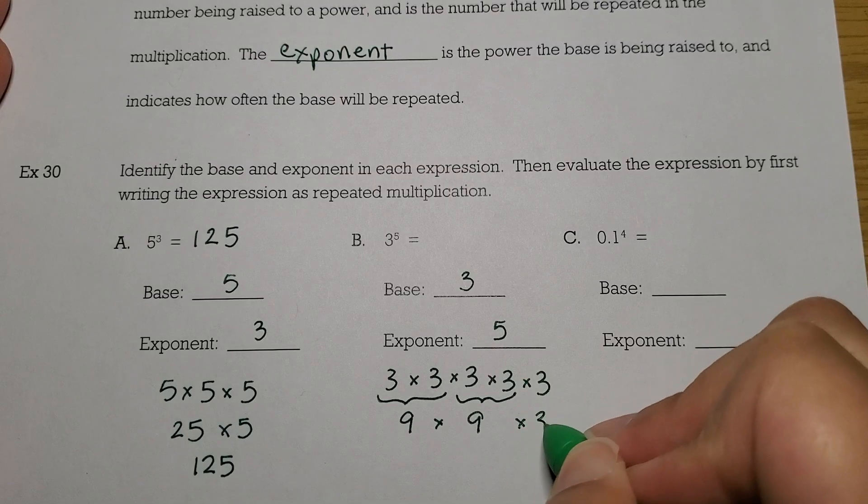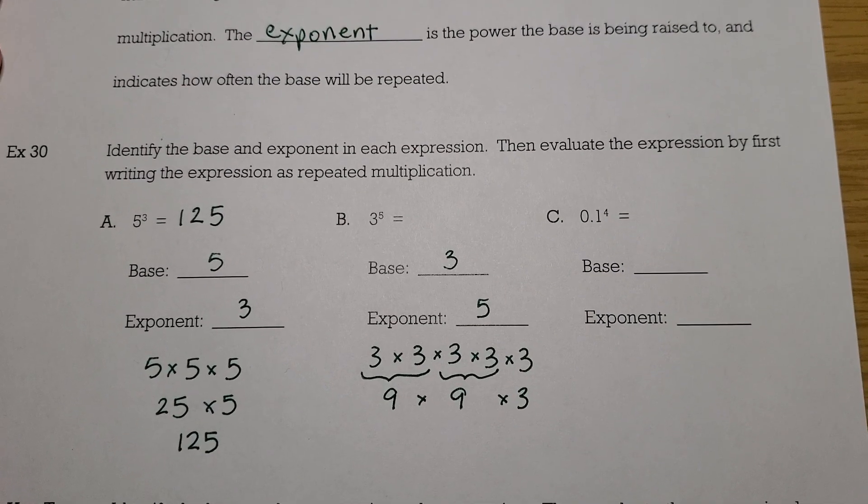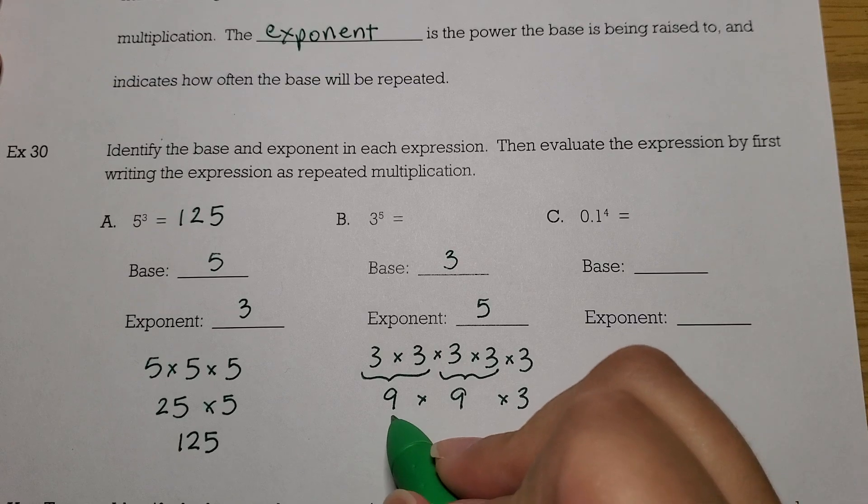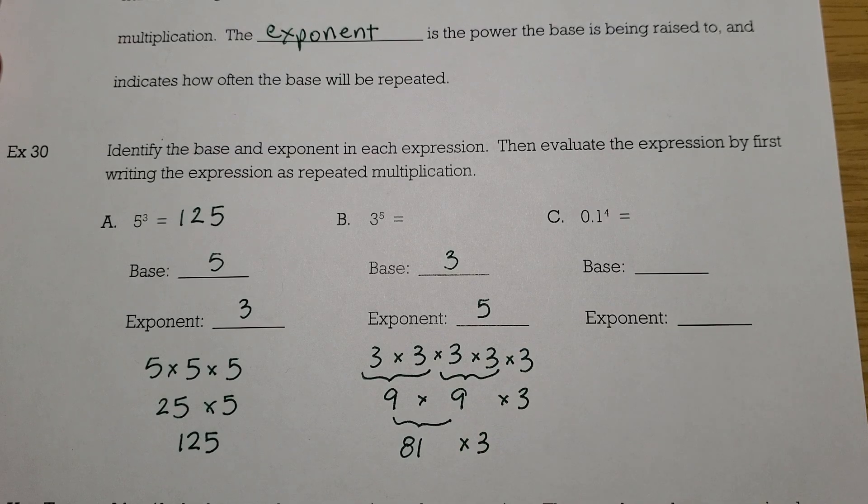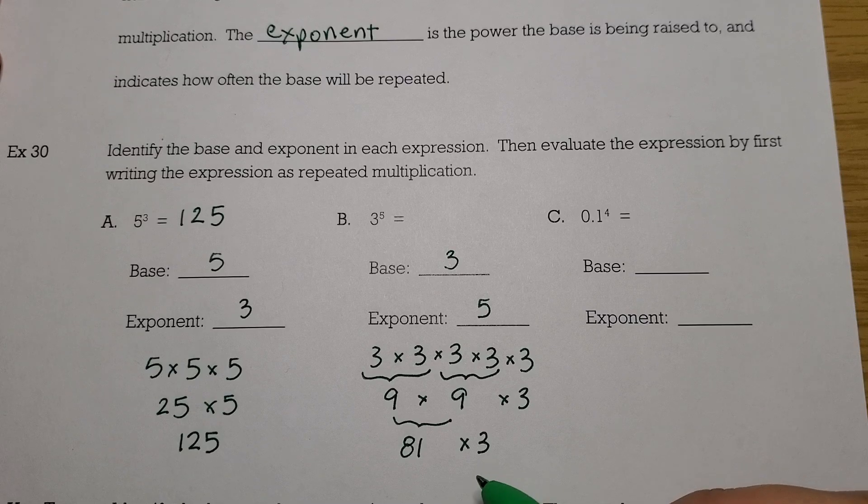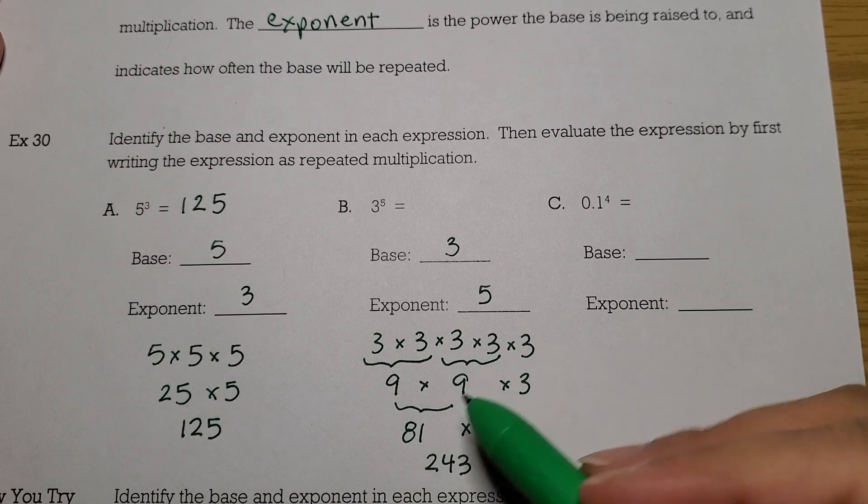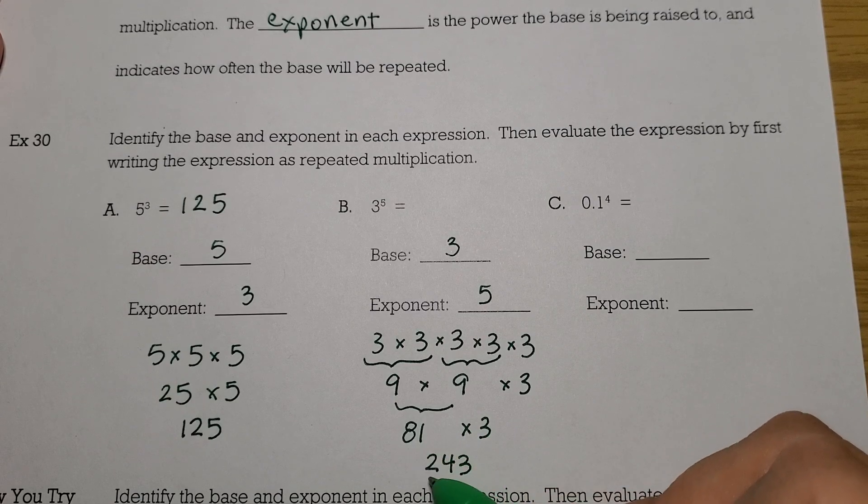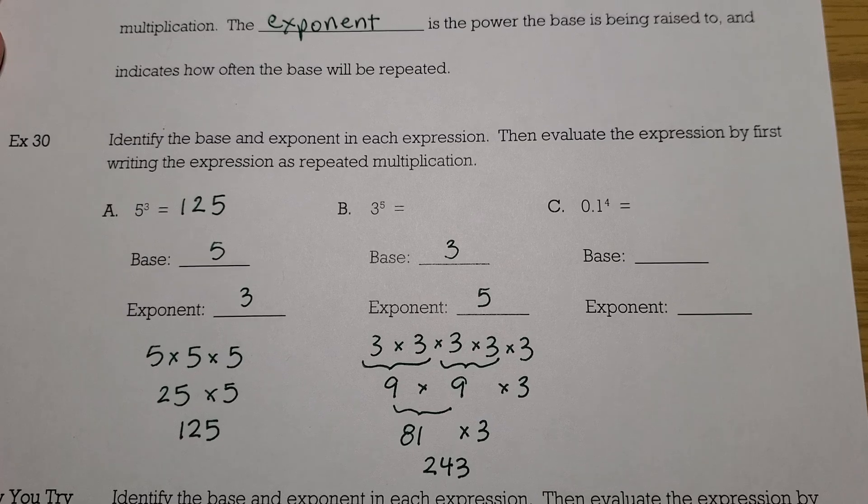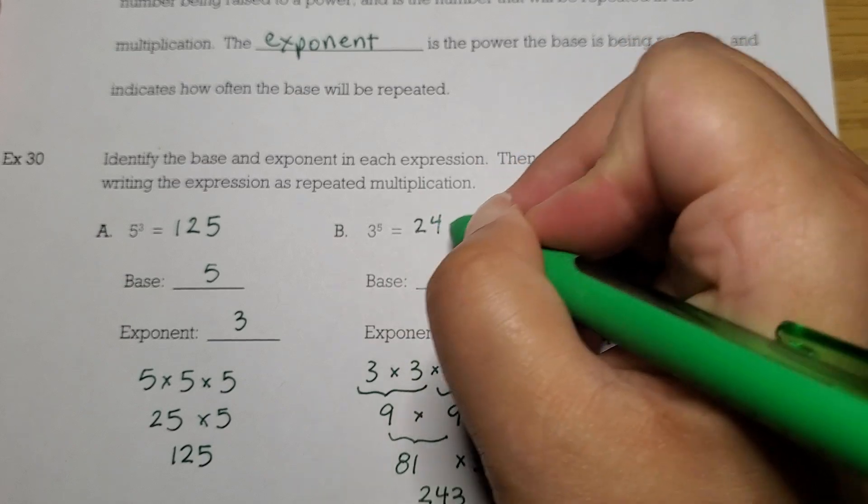And then I'm going to bring down that lonely 3 off there on the edge. Now I know that 9 times 9 is 81. Bring down that times 3. And 81 times 3 is going to be 243. That's because 3 times 1 is 3, and 3 times 8 is 24. So this means that 3 to the fifth is 243.